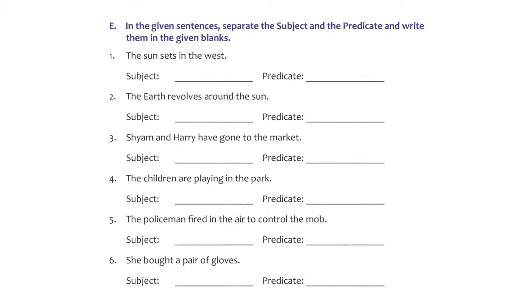Now let's go on to the exercise section that's given below that and try and see what is the subject part and what is the predicate part. One, the sun sets in the west. What is this sentence talking about? The sun. So that's the subject. Predicate is the rest of the sentence, sets in the west. Two, the earth revolves around the sun. The subject is the earth. Predicate is revolves around the sun. Three, Shyam and Harry have gone to the market. Subject, Shyam and Harry. Predicate, have gone to the market.